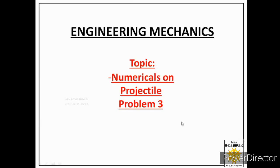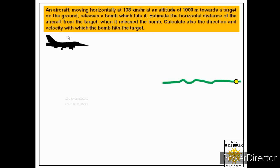Welcome students. Today we will solve the third problem on projectile motion. So let us start today's lecture by reading the statement first. An aircraft moving horizontally at 108 km per hour at an altitude of 1000 meters towards a target on the ground releases a bomb which hits it. Estimate the horizontal distance of the aircraft from the target when it released the bomb. Also calculate the direction and velocity with which the bomb hits the target.